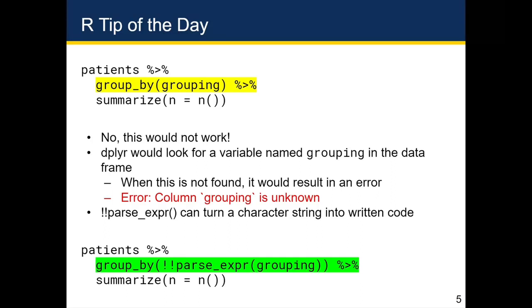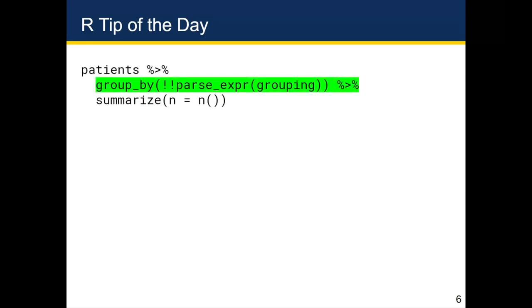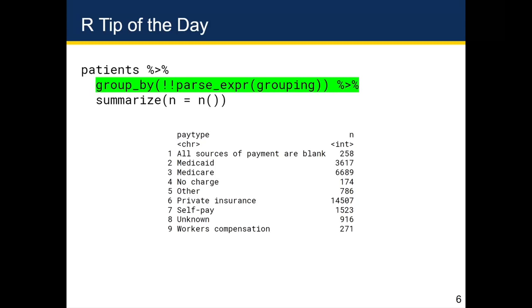And this code right here would actually give you the intended result. So if you type this in, you would get back a data frame with two columns, pay type and N, which has the counts of each of the different types of pay type.